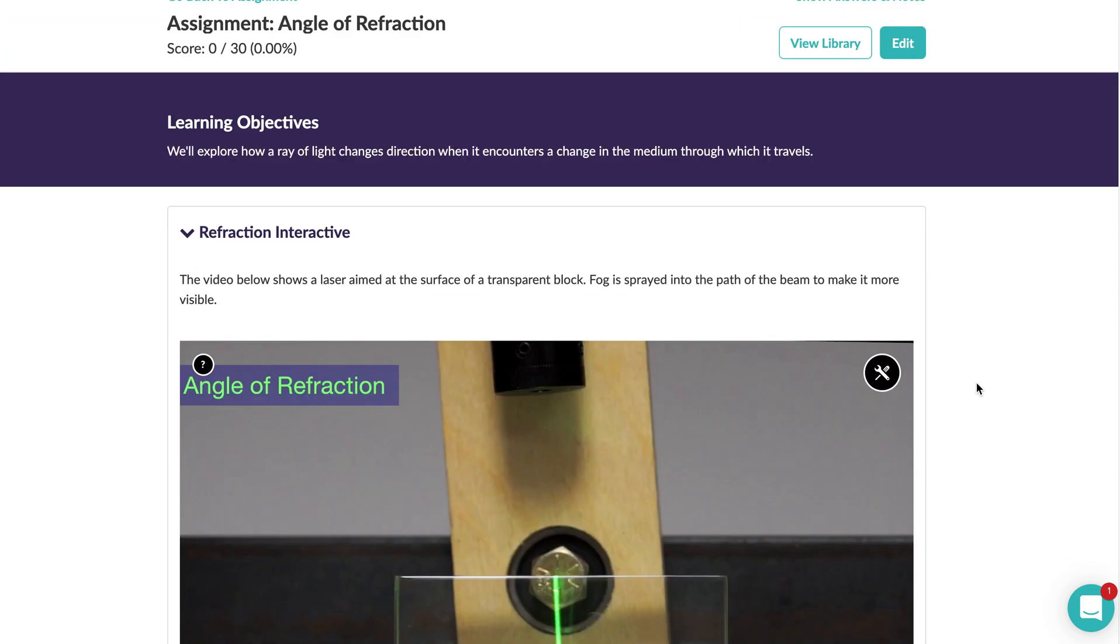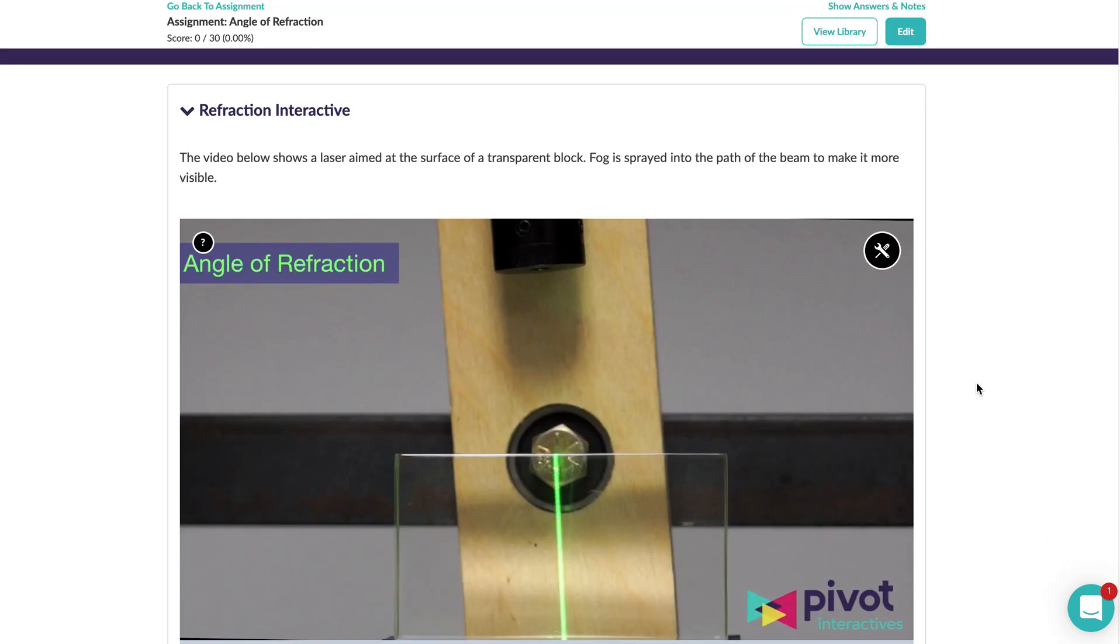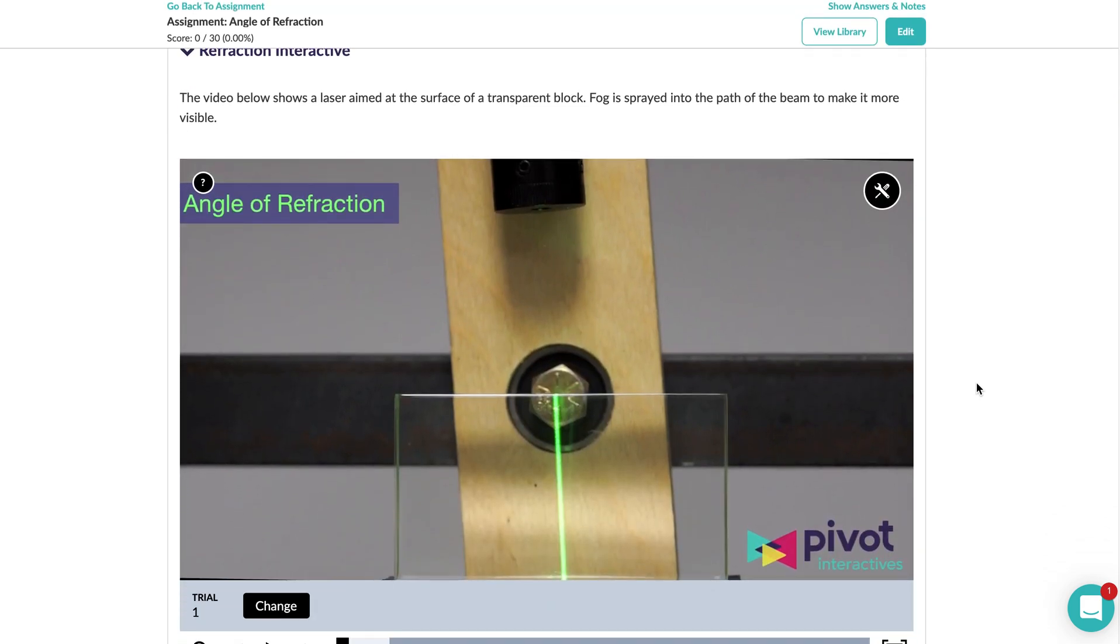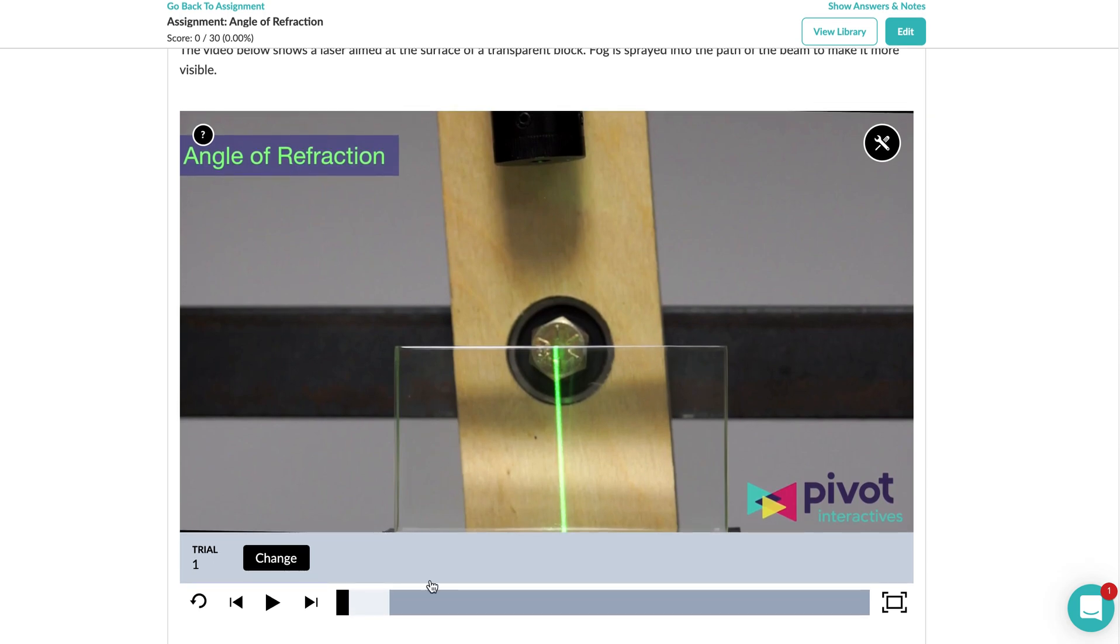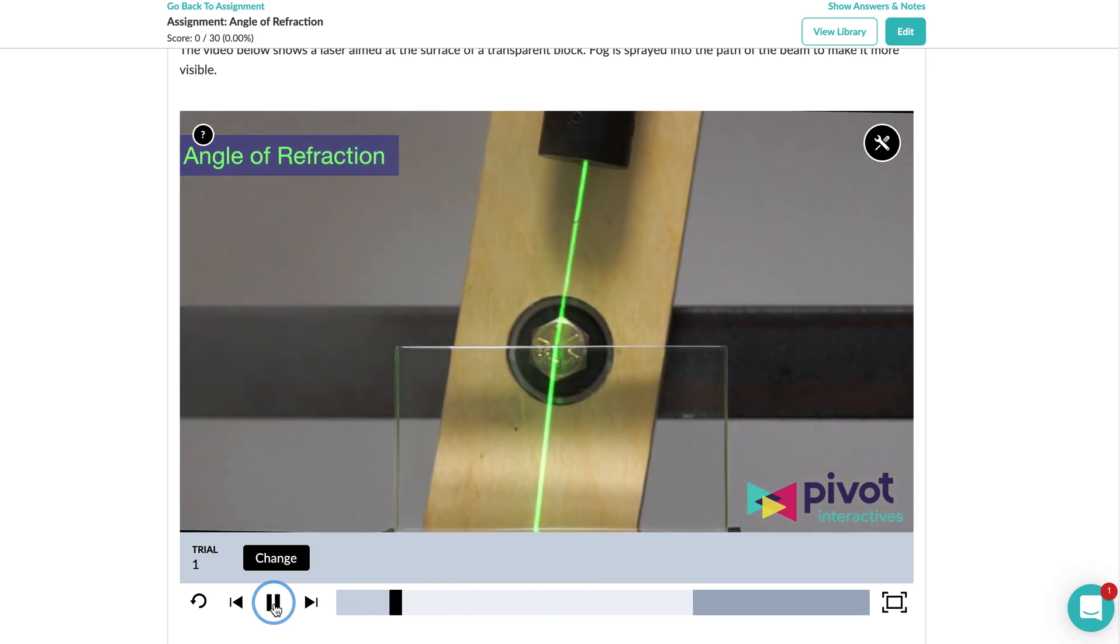I just want to show you the simulation that we're going to be investigating. For the refractive interactive, they have a laser and there's this medium, so it's traveling through air until it hits this type of plastic-looking thing.